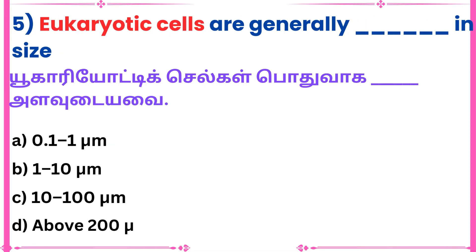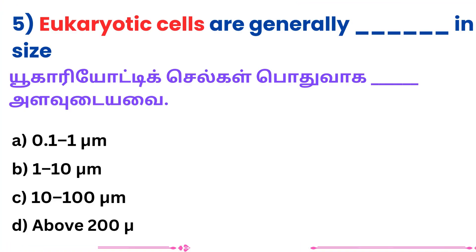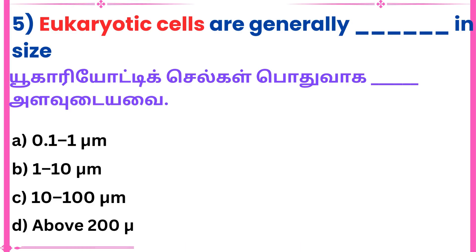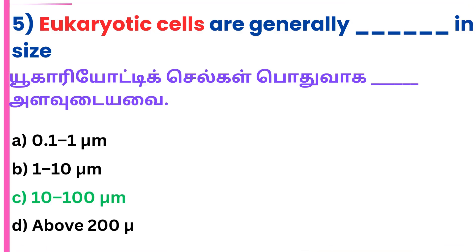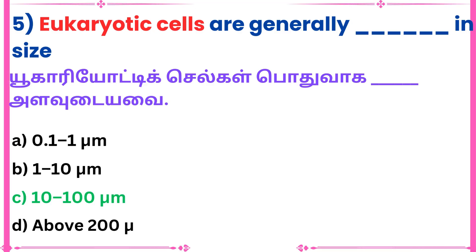Fifth question: Eukaryotic cells are generally dash in size. Answer: 10 to 100 micrometers.